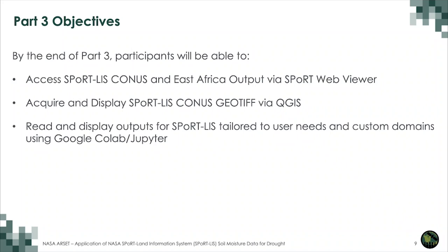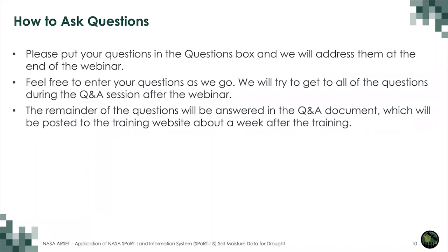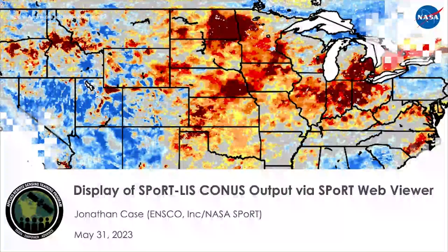The objectives for the third part of the webinar series are as follows. By the end of part three, participants will be able to access SportLIS Continental United States and East Africa output via the Sport Web Viewer, acquire and display SportLIS Continental United States GeoTIFFs via QGIS, and read and display outputs for SportLIS tailored to user needs and custom domains using Google Colab and Jupyter. Questions are strongly encouraged — please put them in the question box and we will address them at the end of the webinar. We will now transition to Jonathan Case to learn about the webpage interface for SportLIS output.